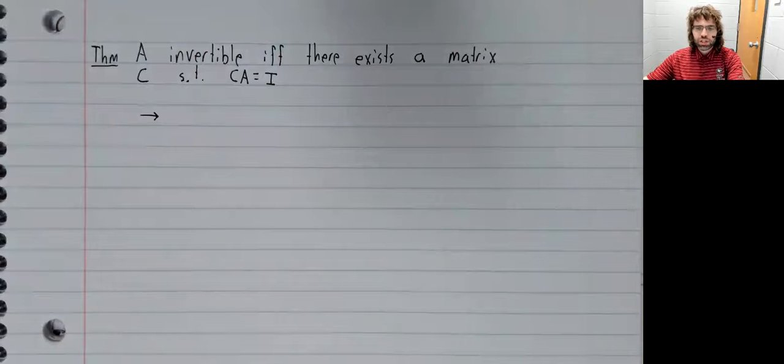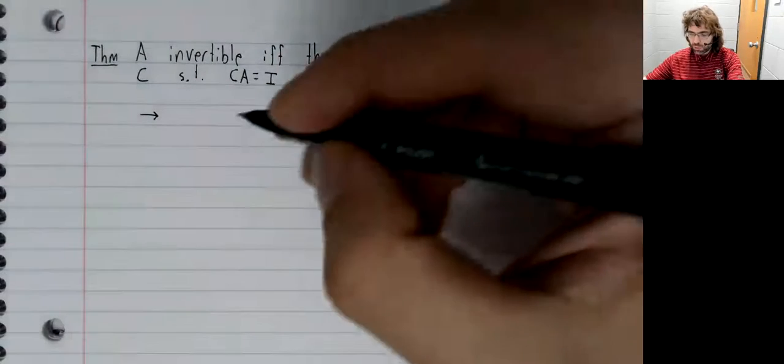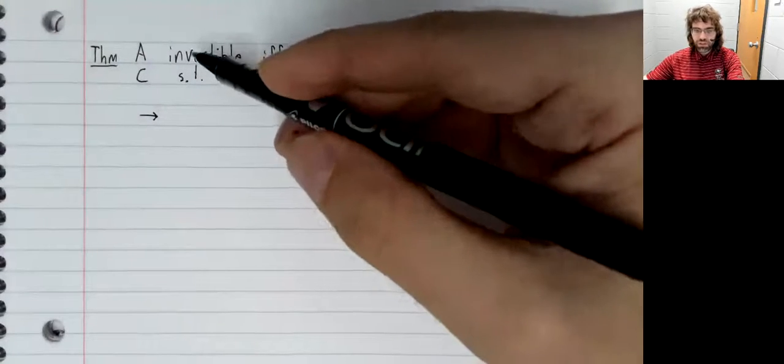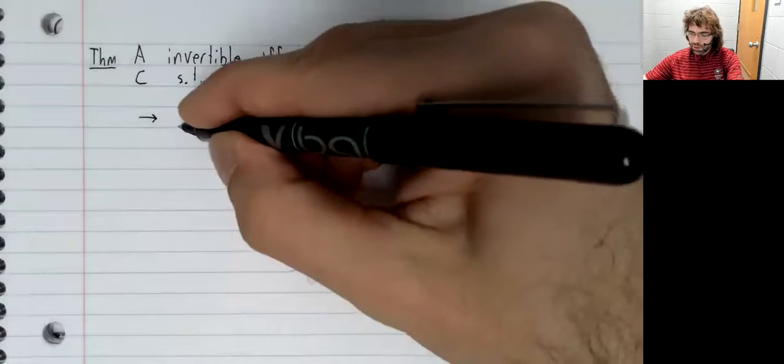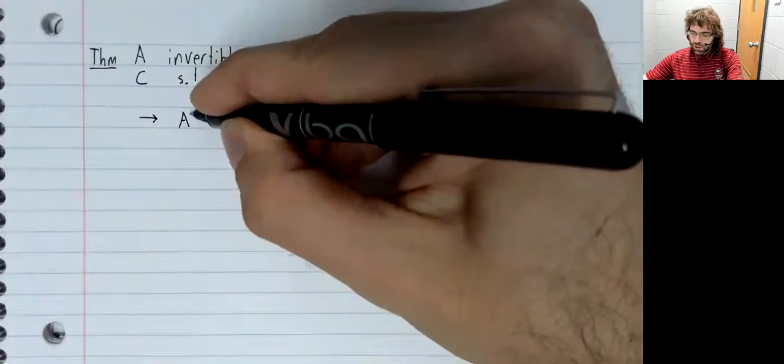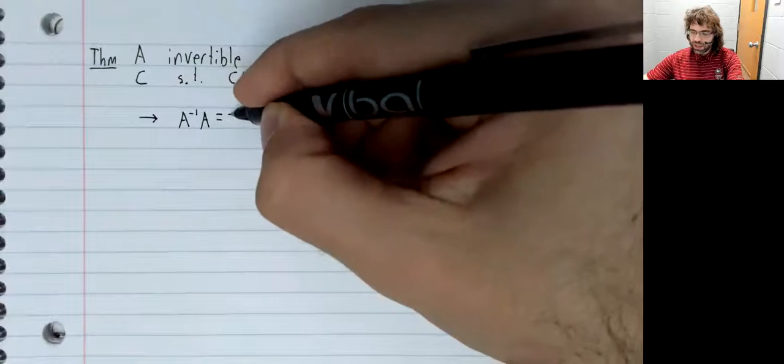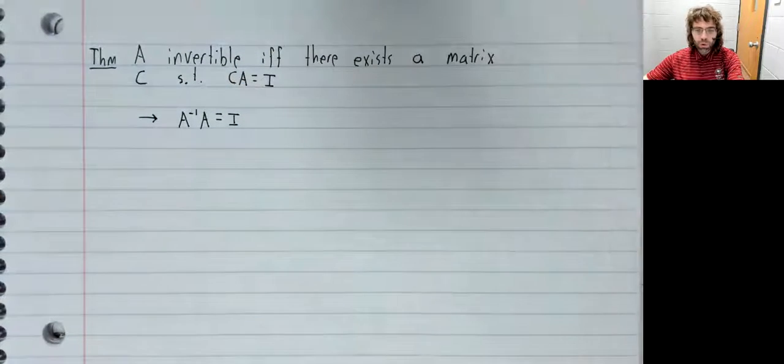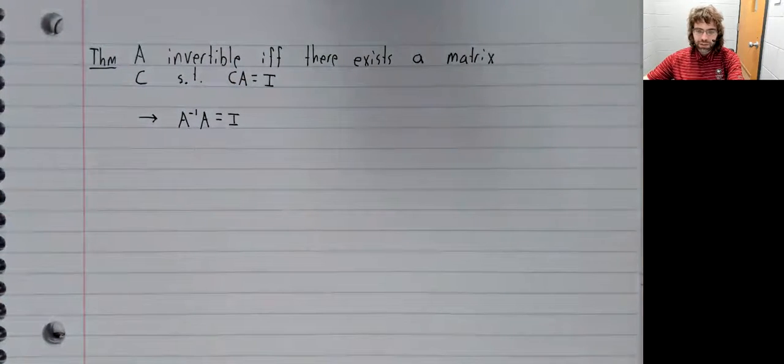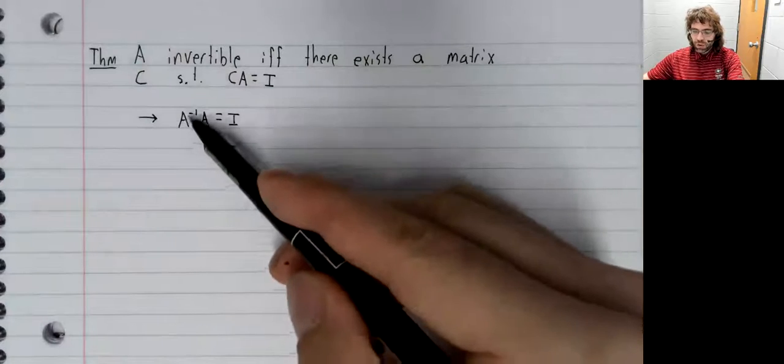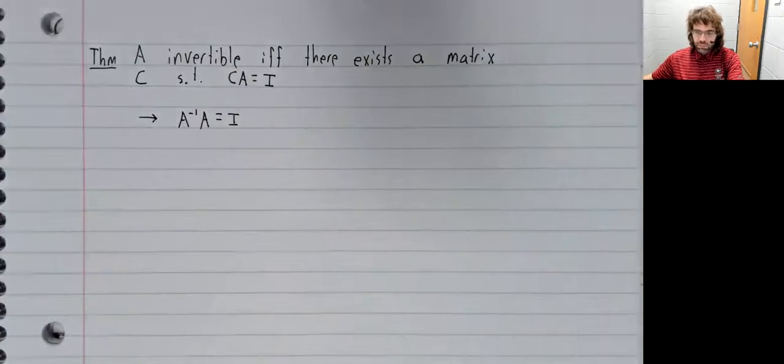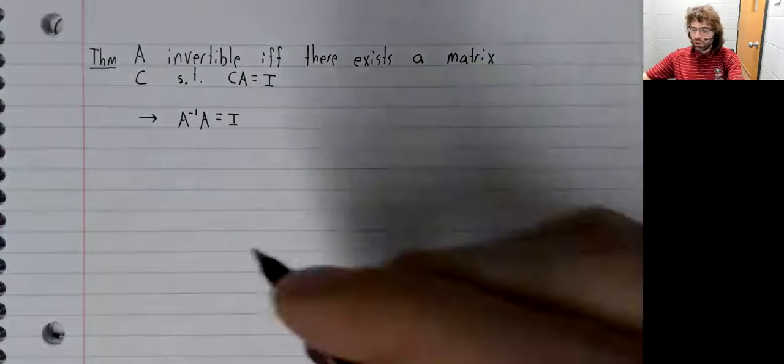One of the directions is completely trivial. If A is invertible, then A inverse times A equals I, and A inverse is C. No problem.